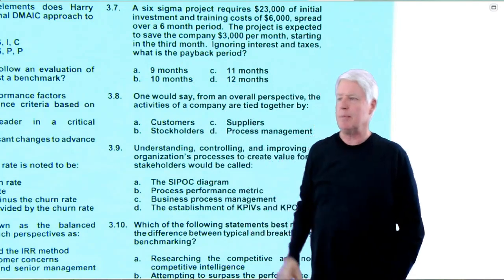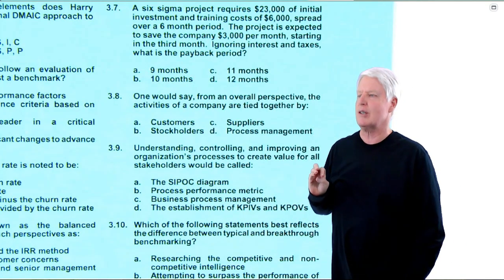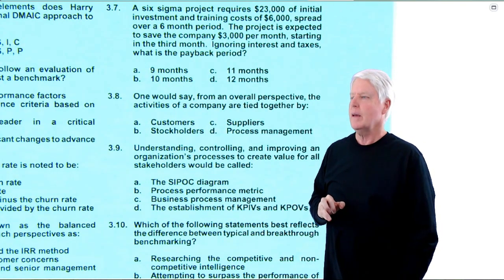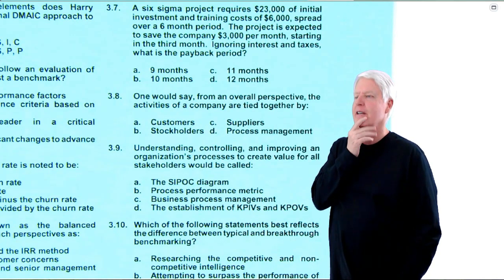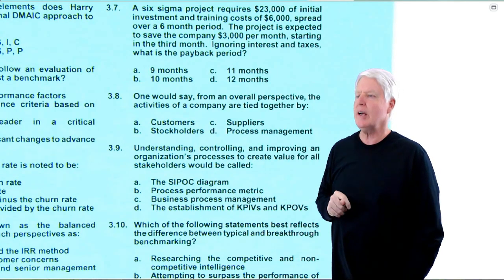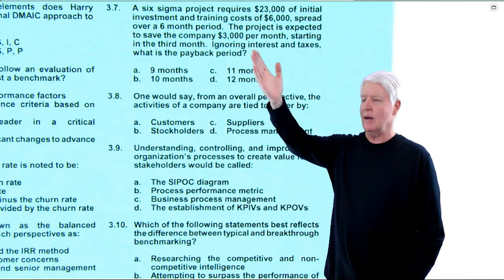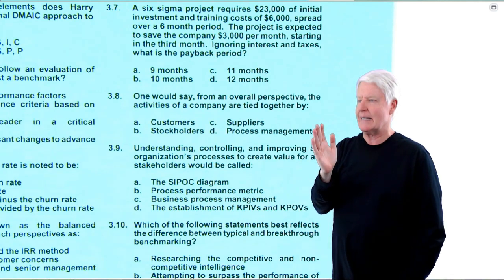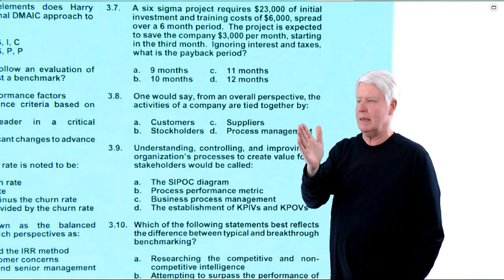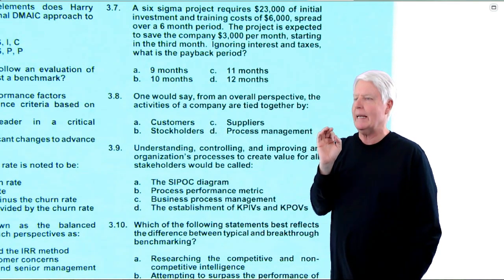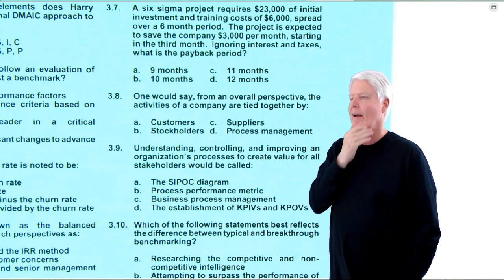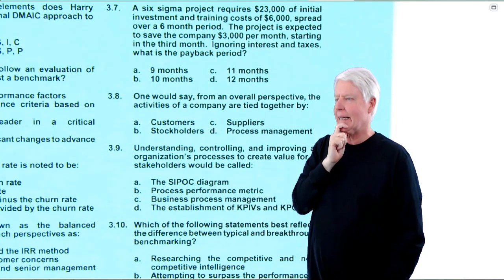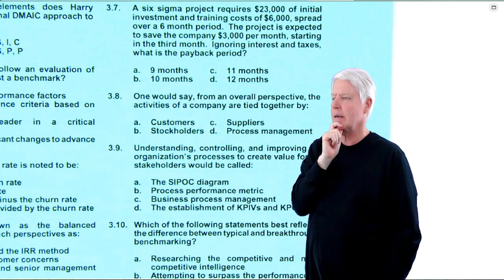Question 7: A Six Sigma project requires $23,000 of initial investment and training costs of $6,000, so $29,000 invested thus far, spread over a six-month period. The project is expected to save the company $3,000 per month starting in the third month — meaning there are three months before savings begin. Ignoring interest and taxes, what is the payback period? In other words, how long to get that $29,000 back at $3,000 per month? Let's go to the whiteboard.